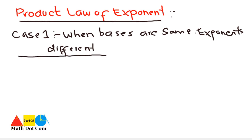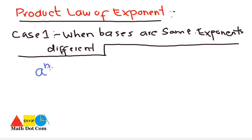How do you deal with this case when you are given two numbers whose bases are the same and the exponents are different? In generic form, we can write it as: one base with an exponent and the same base with a different exponent. These are two numbers with the same bases and different exponents. As it is a product law, we take their product — the dot represents multiplication.